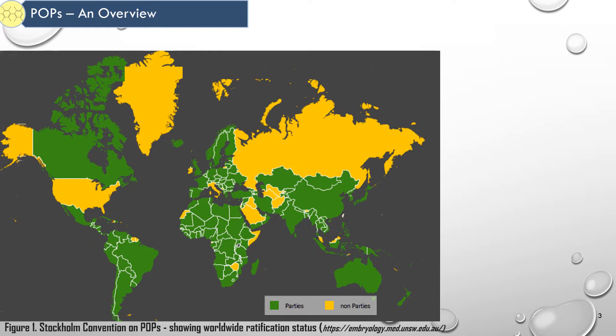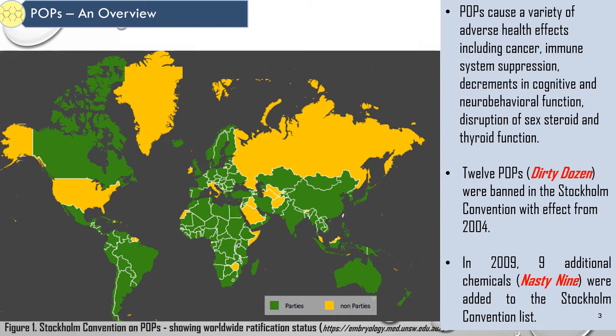South Africa became a party to the Convention in September 2001. The principal objective of the Convention is to protect humans, animals and the environment from POPs contamination with the intent of stopping their production and usage. Some of the adverse effects of POPs include cancer, immune system suppression, decrement in cognitive and neurobehavioral function, and disruption of sex steroids and thyroid functions. 12 POPs, named the Dirty Dozen, were banned in the Stockholm Convention with effect from 2004.